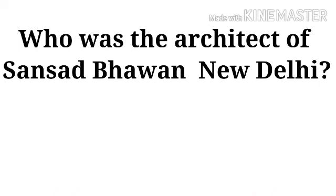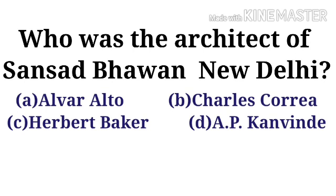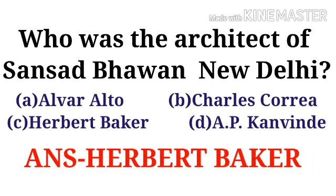Who was the architect of Sansad Bhavan, New Delhi? Option A: Alvar Aalto, option B: Charles Correa, option C: Herbert Baker, option D: (not stated). Horizontal sun shades are required to protect windows. The correct option is option C, Herbert Baker.